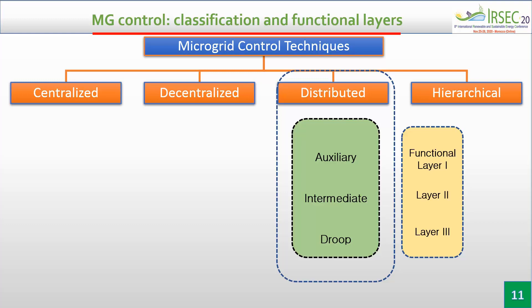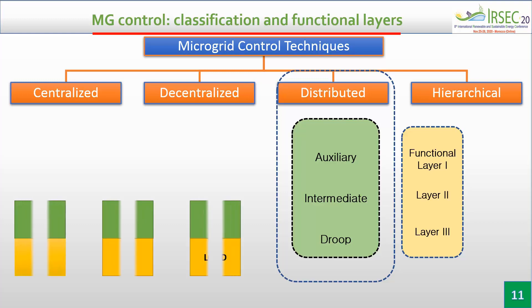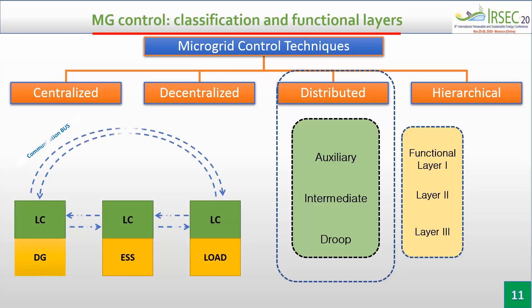The distributed control also has a three-layer structure: droop, intermediate, and a third layer. In this control scheme, it incorporates the advantages of both centralized and decentralized architectures, and it is the most widely exploited approach in the literature.